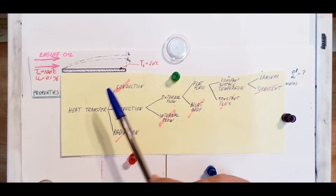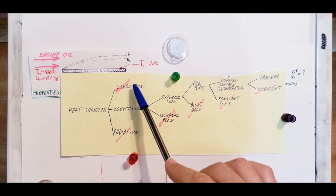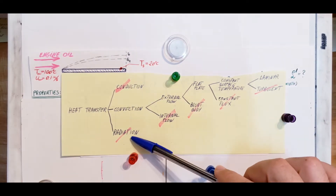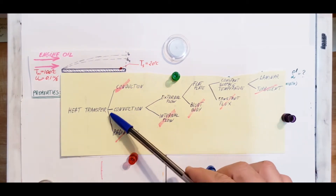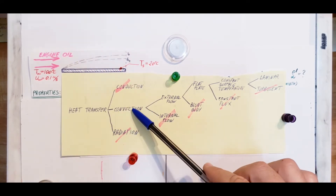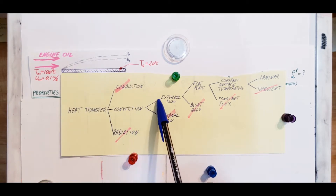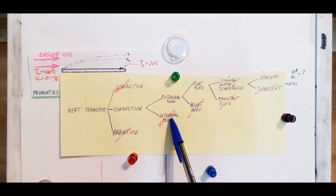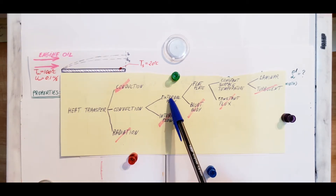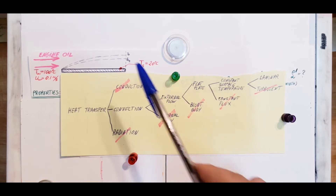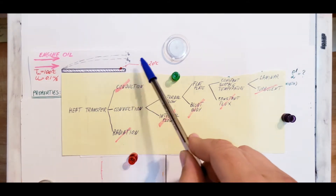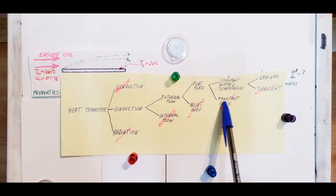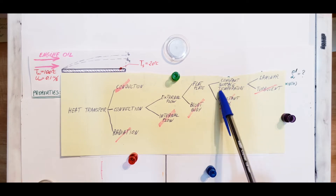In heat transfer, we have three main parts: conduction, convection, and radiation. We have a fluid going over a solid surface, so this is convection. Now, what kind of convection? We are not inside a pipe or duct, so we can confidently say external flow. This breaks up into flat plate or blunt body — we're dealing with a flat plate. The surface is at 20 degrees Celsius with no mention of constant flux, so we are in the isothermal surface category.